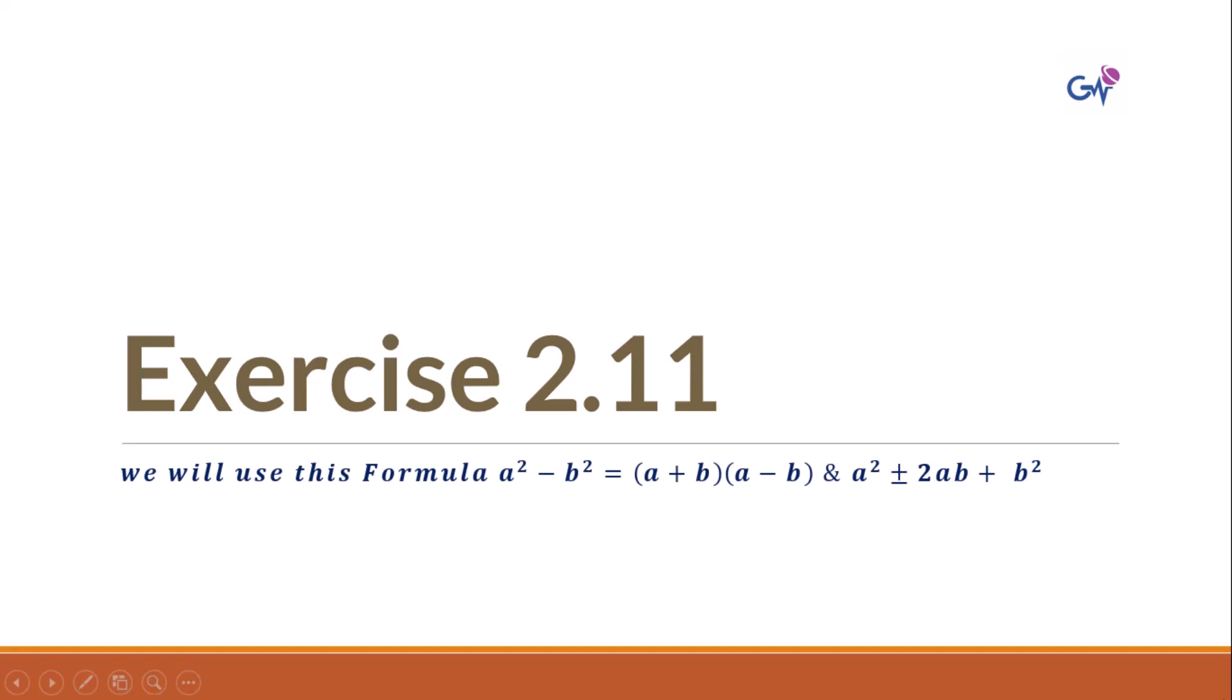Here we will use these two formulas to solve exercise 2.11: a² - b² equals (a + b)(a - b) formula, and a² plus or minus 2ab plus b² formula. We have to solve these questions.